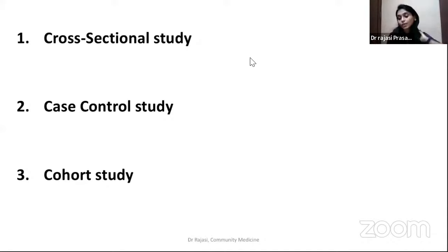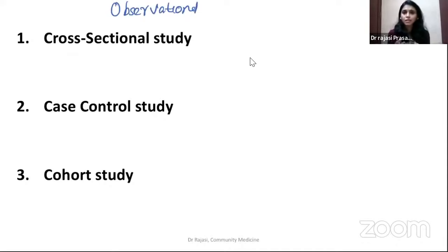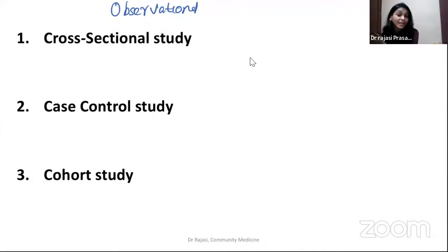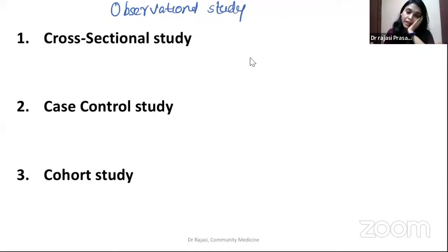The most important study designs are cross-sectional study, case control, and cohort. Almost 99% of you who attended this class would have done one of these for your PG thesis. These three come under observational study designs — meaning you are just observing and not intervening. Once you intervene, that becomes experimental, which is where RCT falls.